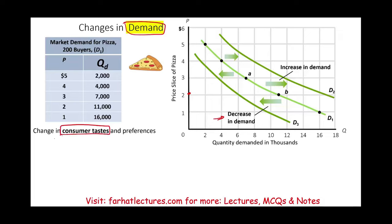Change in consumer taste. Let's assume there was a new study that shows that consuming pizza on a regular basis increases your IQ — just for the sake of illustration. So as a college student you'd say, 'I'm going to consume pizza because my IQ and GPA will go up.' Or the opposite: a study shows pizza is extremely harmful to your health. Consumer taste changes, and your demand will shift. At a price of $1, instead of demanding 16, you will be demanding only 9.